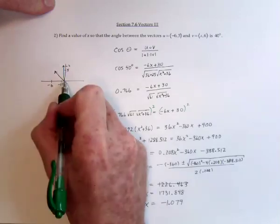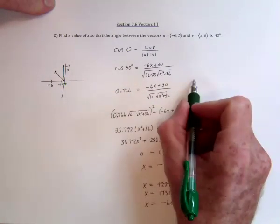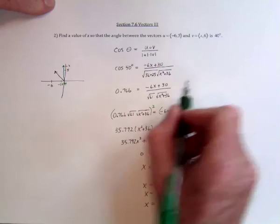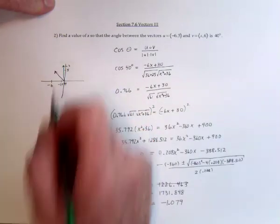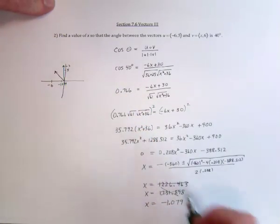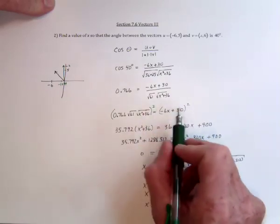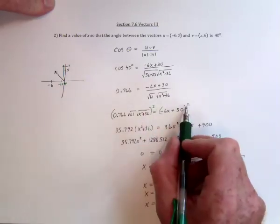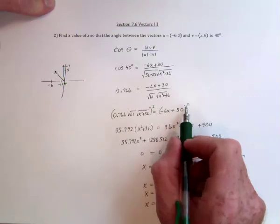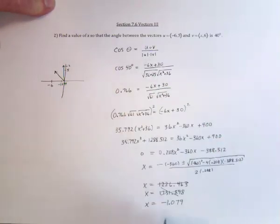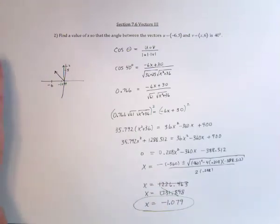The other one of x being way out here would then give me a big angle. That's not right. So when you square both sides of an equation, that can then introduce extra answers that aren't really a part of what we want. So those extra answers need to be thrown away. And then x equals negative 1.079.